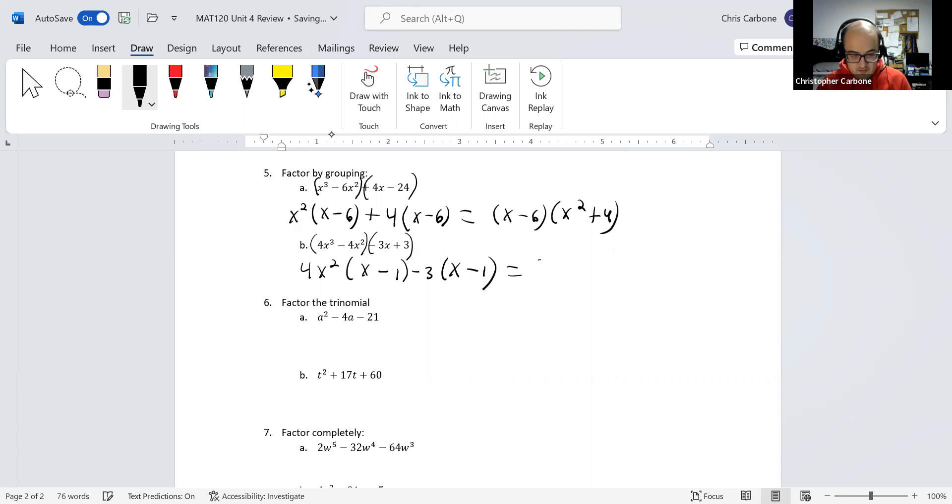So we would be left with x minus 1 times 4x squared minus 3. Let me know if you have any questions or concerns.